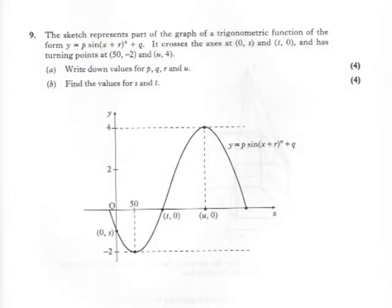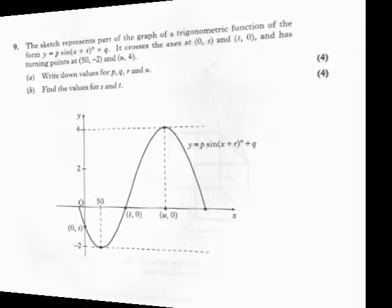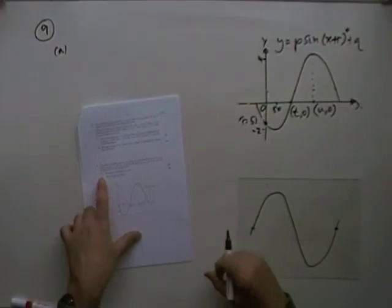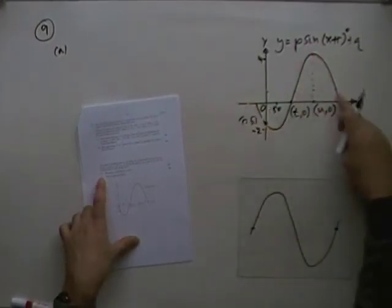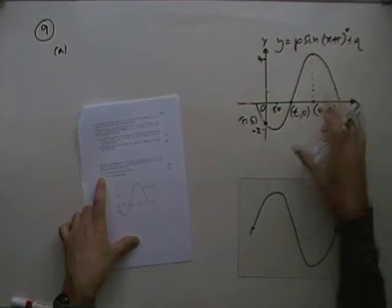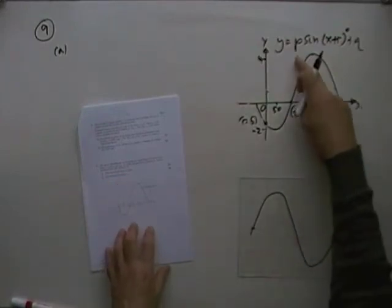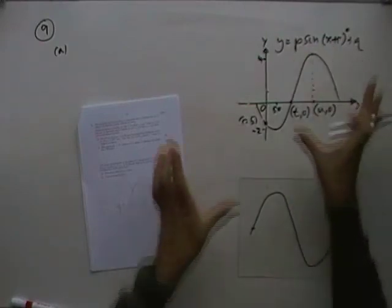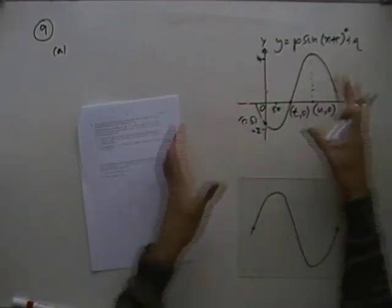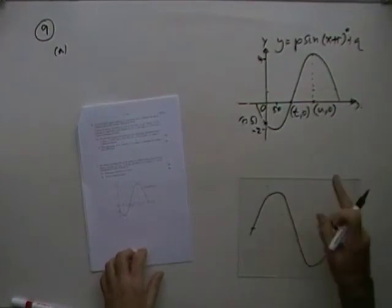Right, now, question 9. So, same as before, pause, try it, and then check it. Number 9. Part A. There's some sine curve here that's been transformed in some manner. You'd find the values of P, Q, R, and U. Well, P is the amplitude, Q is the vertical shift, and R is the horizontal shift, the phase. Right, one of the things is there's two possible ways of arriving at that from a sine curve. You could have started with the normal sine, and then there's a shift up and a shift along.